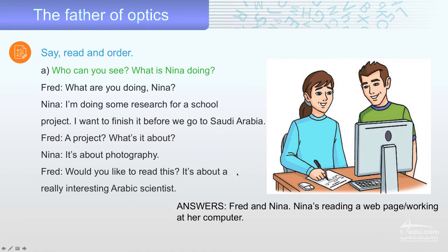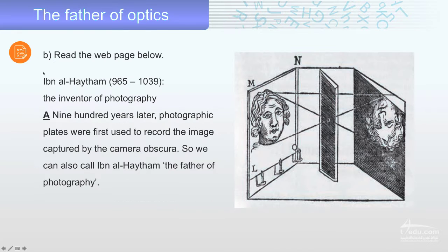Would you like to read this? It's about a really interesting Arabic scientist. The answer to the question, Fred and Nina. Who can you see? Fred and Nina, of course. What is Nina doing? Nina's reading a web page at her computer.